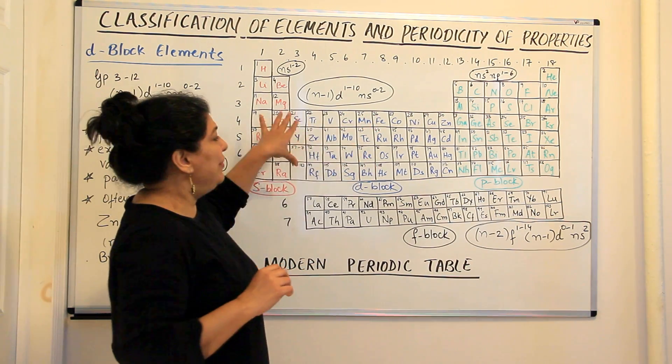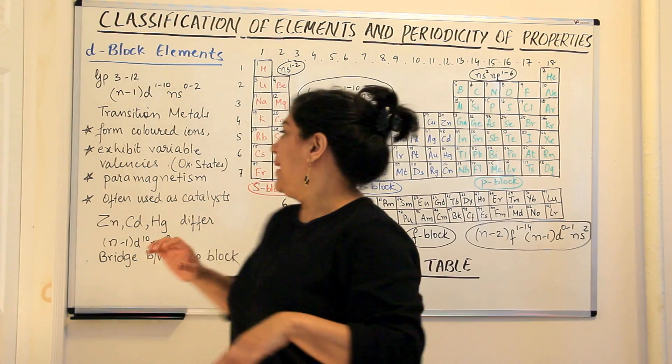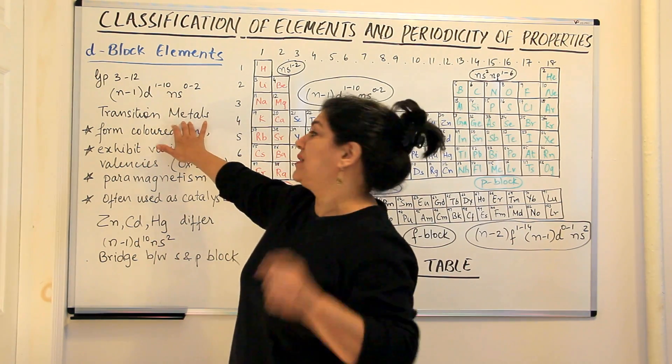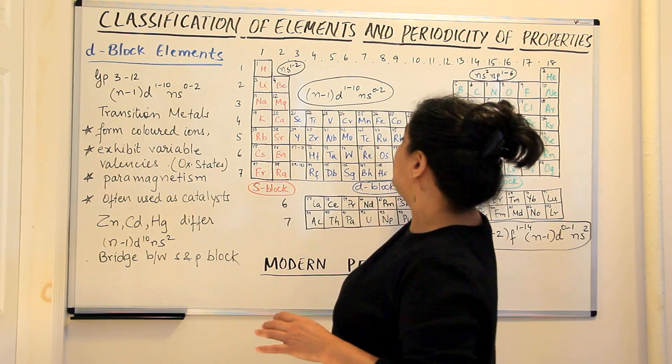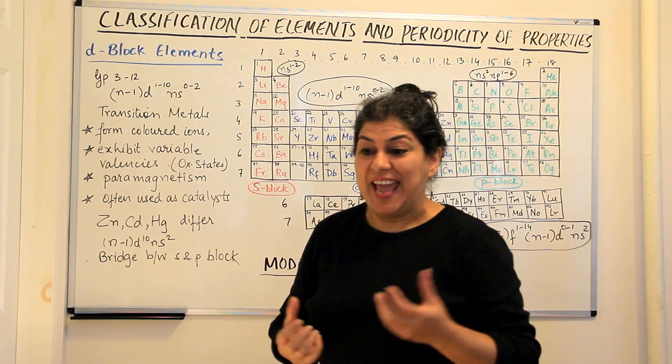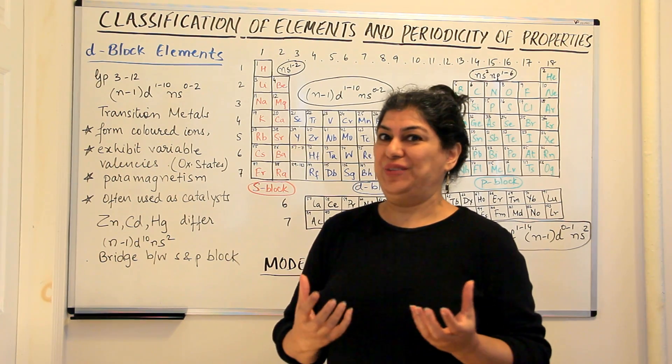All of them are metals and that's why they are called transition metals. One property of them which is very important is that they form coloured ions and that's the beauty of these elements.